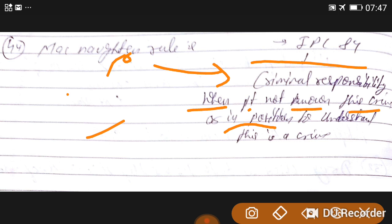I hope it's clear for you. Let's revise it again. What is McNaughton rule? McNaughton is the name of a person, and it includes IPC 84, Indian Penal Code 84. It represents the criminal responsibility of a person who doesn't know.